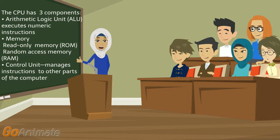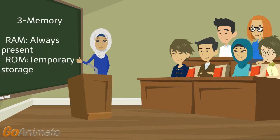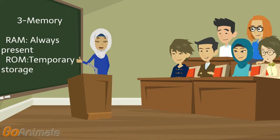The CPU components also include memory — read-only memory and random access memory — and the control unit. The third part is memory, which includes random access memory, which is always present, and read-only memory, which is permanent storage we can't change.